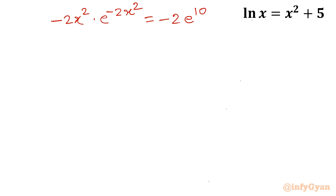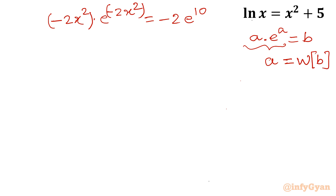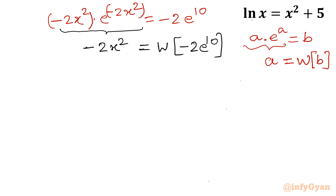Now, this matches the form a·e^a = b, where a = −2x². Using the Lambert W function, we write W(a·e^a) = a. So applying Lambert W to both sides: −2x² = W(−2·e^10). Since this minus 2 is unwanted and I want to calculate x, I will divide both sides by −2. So x² = W(−2·e^10) / (−2).